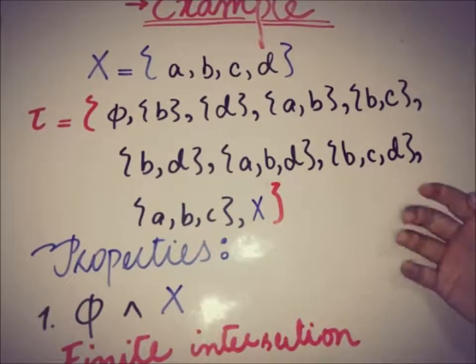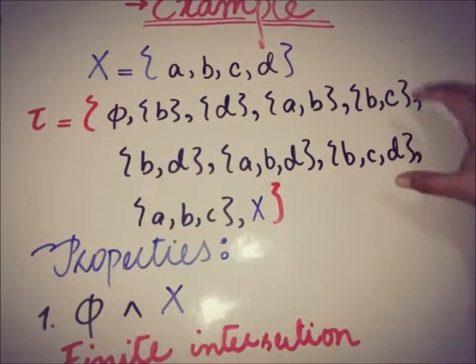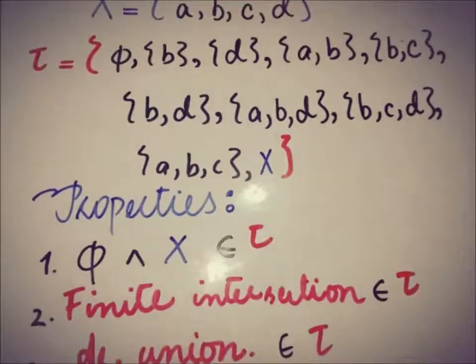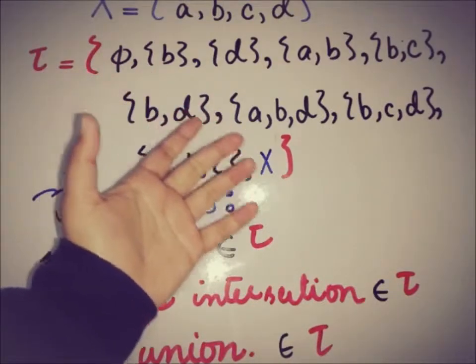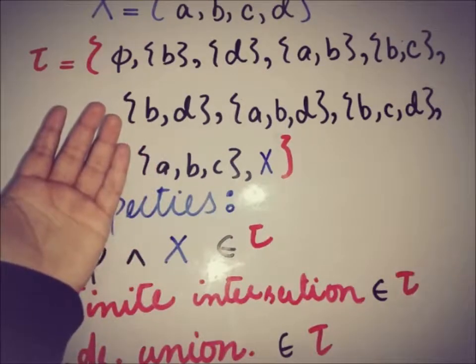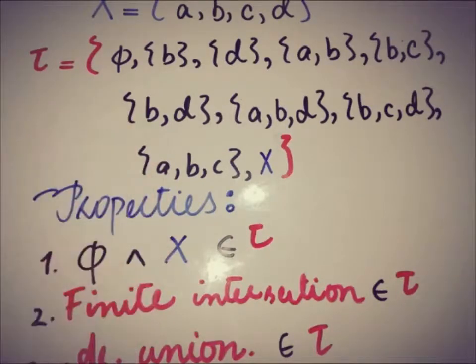The third property of being a topology is arbitrary unions. Talking about the arbitrary union, that is taking the arbitrary unions of some of the elements or whatever you want from this collection, and we'll check that whether the union will be in that collection as well or not.